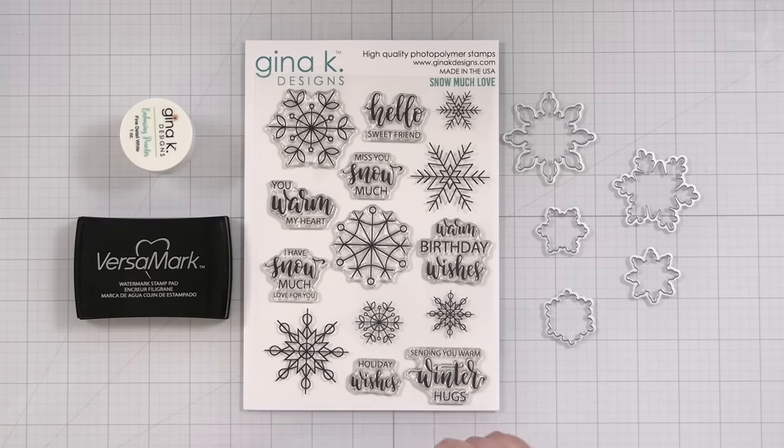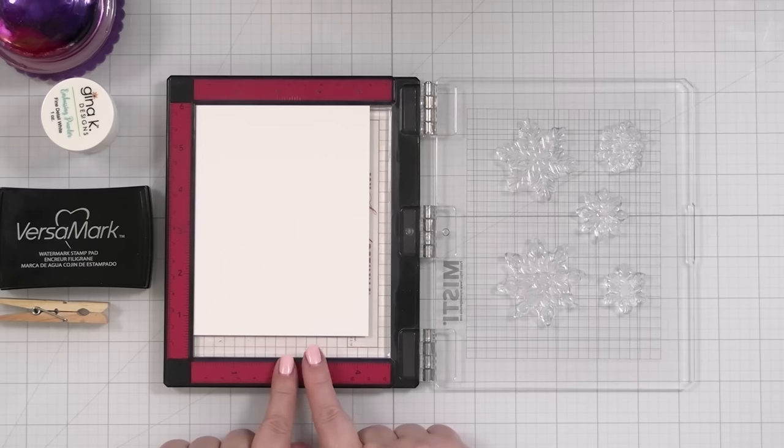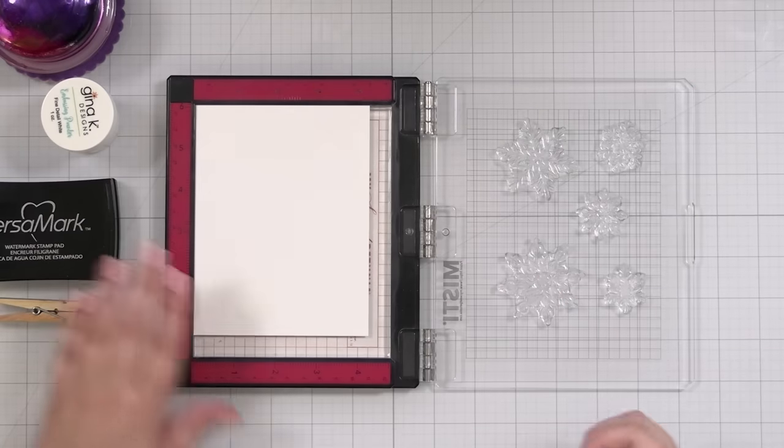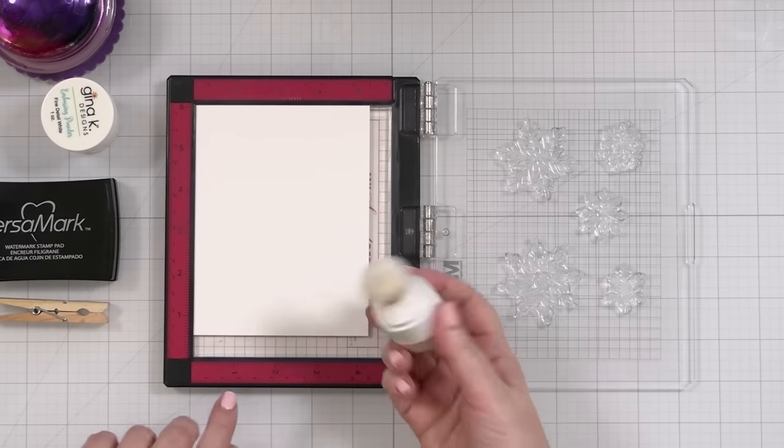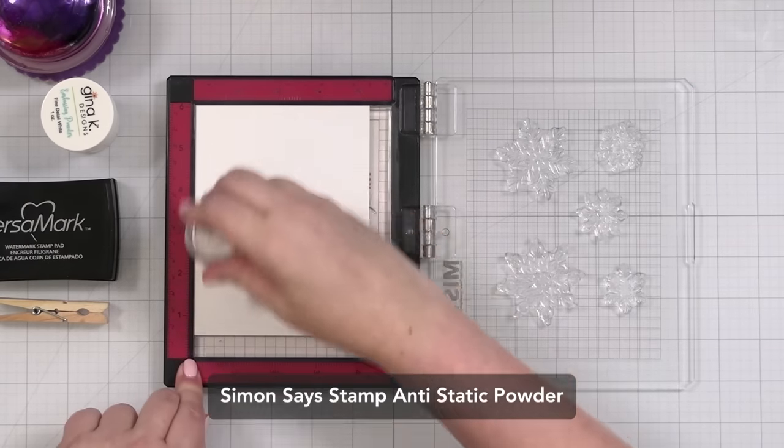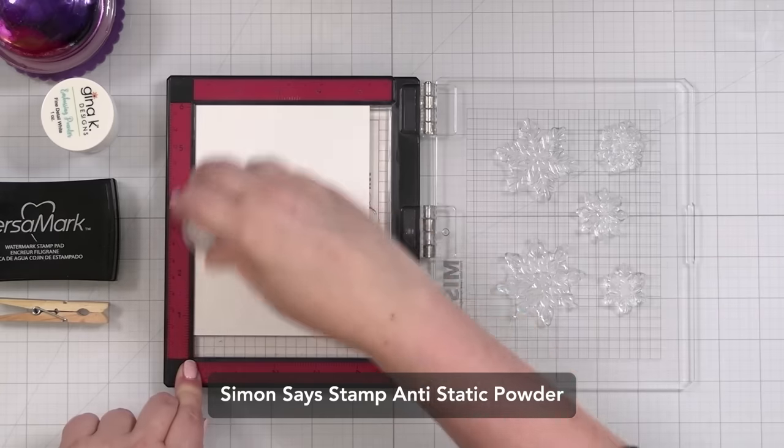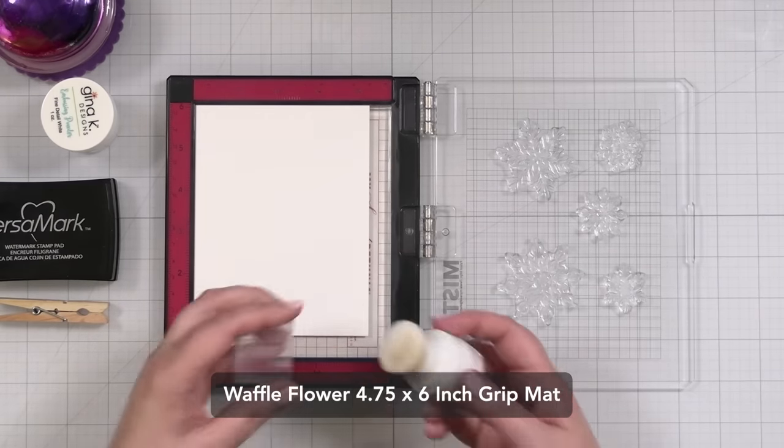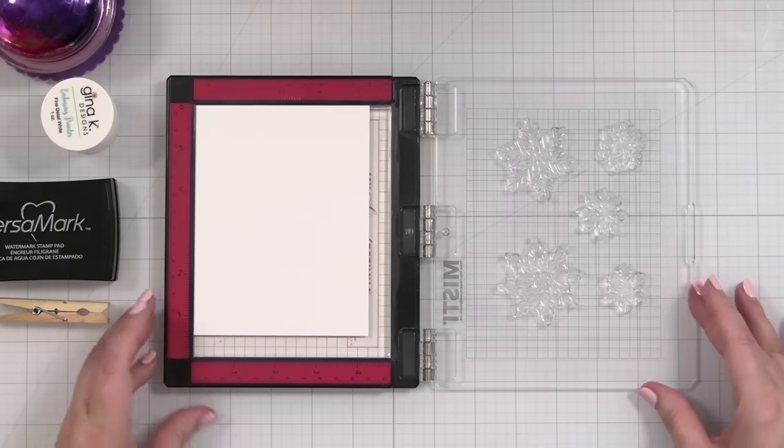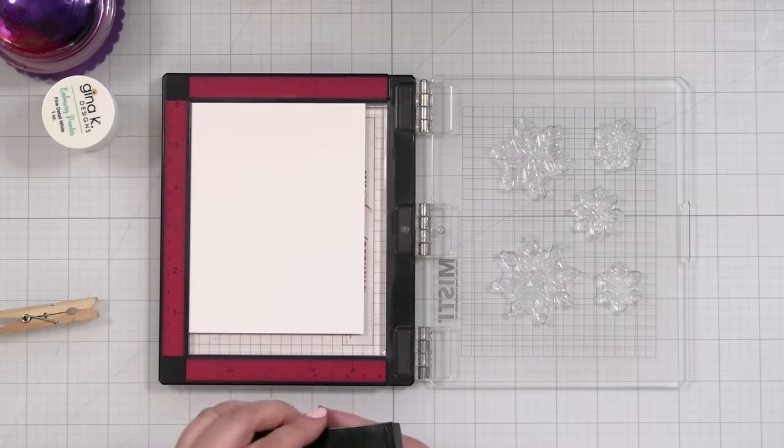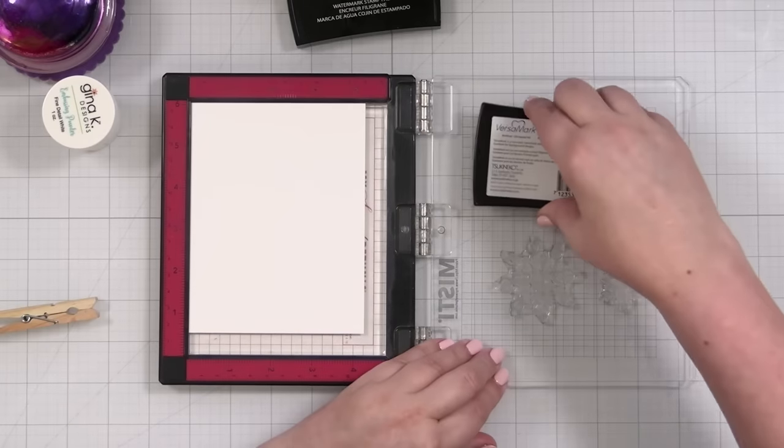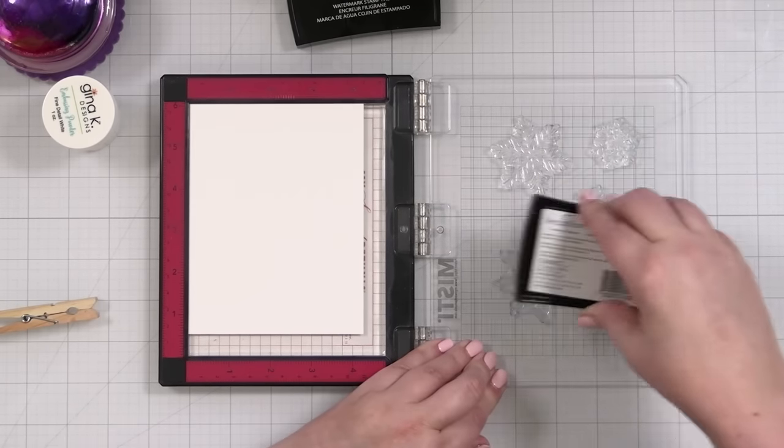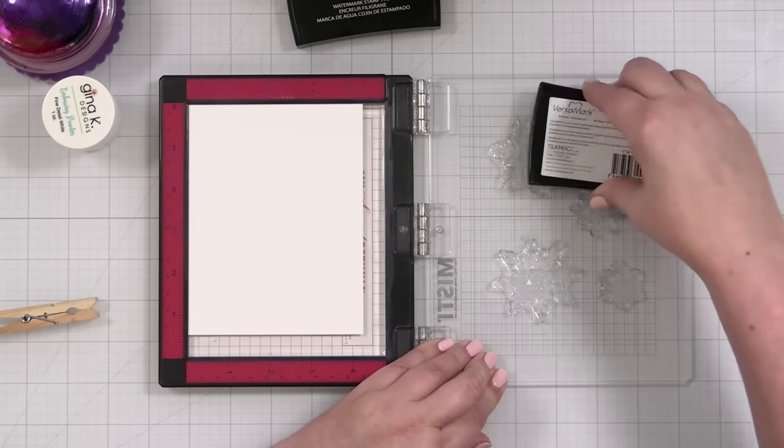So let's start with stamping some snowflakes. I've got a piece of Gina K Designs heavy base weight white, and I've already positioned my stamps and picked them up, popped them on my Misti door, and I'm going to add some anti-static powder. Now my paper is held in by a four and three-quarter by six inch grip mat from Waffle Flower. Let's ink up with our Versamark. I've already been playing with these stamps a little, so I've already primed them and conditioned them a bit.